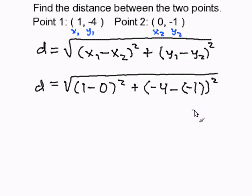Now I'm going to simplify our formula. 1 minus 0 is 1, and don't forget the square. -4 minus -1 becomes -4 plus 1, and -4 plus 1 is -3, and I must not forget my square.